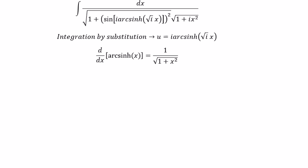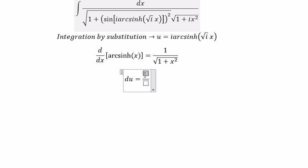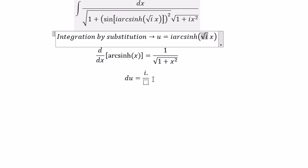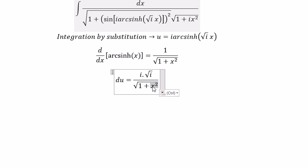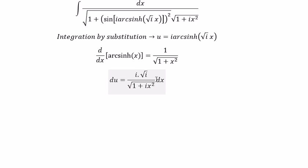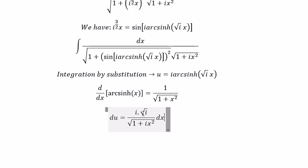So you will get du equal to — taking the first derivative — i multiplied with the square root of i, and we have this expression. We change to i s squared ds. Because we don't have i multiplied with the square root of i, we divide both sides by this. We change ds over this expression for the new form in terms of u.